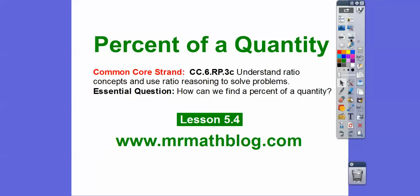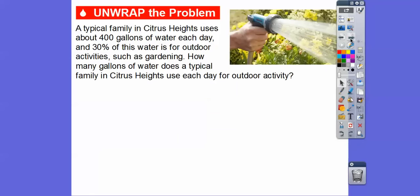Here's our Common Core strand and our question is: how can we find a percent of a quantity? I'm going to show you a couple of methods. A typical family in Citrus Heights uses about 400 gallons of water each day, and 30% of this water is for outdoor activity, such as gardening. So how many gallons of water does a typical family in Citrus Heights use each day for outdoor activity?